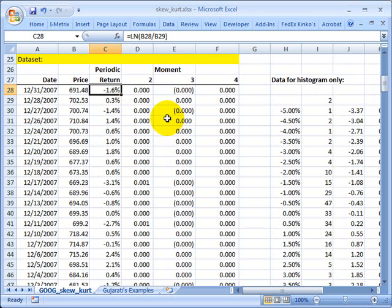They're continuously compounded because Google doesn't pay a dividend. I can get that by simply taking the natural log of the price closed today divided by the previous day's close. So I take that ratio, take the natural log.